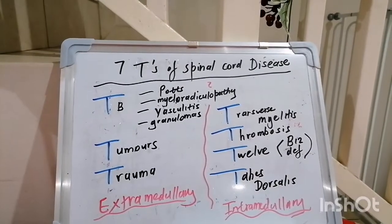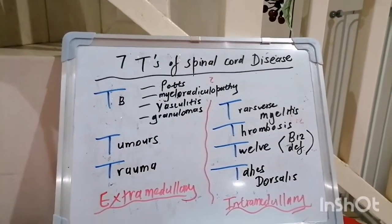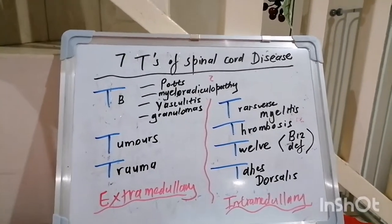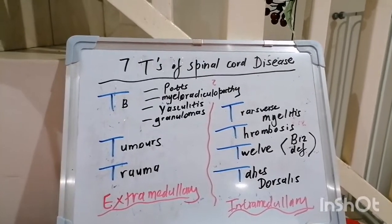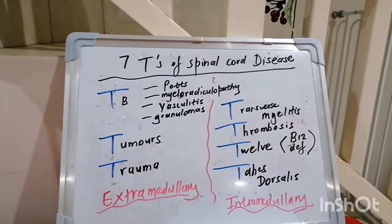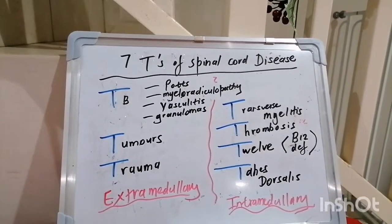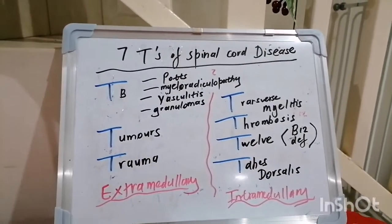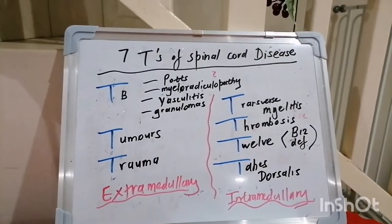What do you call the acid-fast bacilli that joined the army? Military TB. And what did Shakespeare ask his physician when he was afraid that he had tuberculosis? TB or not TB? That is the question.